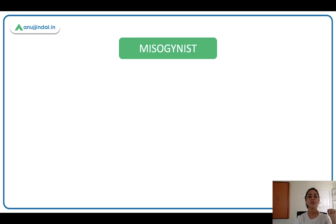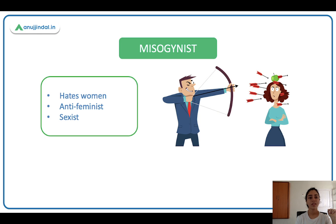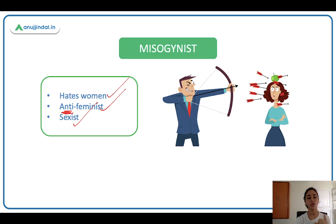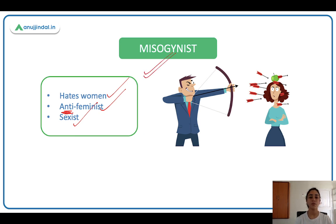Next is misogynist. A misogynist is someone who hates women — they are anti-feminist and very sexist. A feminist supports equal rights and equal opportunities for women, and a misogynist is the opposite. They discriminate against women and hold old-fashioned stereotypical thoughts: 'women belong in the kitchen, cook food — that's your duty. Women shouldn't be in politics, sports, or science.' A person with such views is called a misogynist.